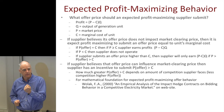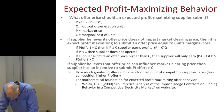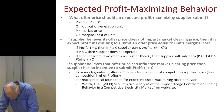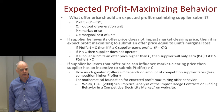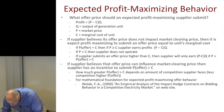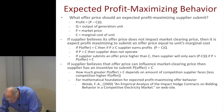A student noted what appeared to be a typo on the slide — the distinction between whether the supplier believes their offer price does or does not impact the market clearing price. The point was clarified: if the supplier believes their offer price does not impact the market clearing price, bid marginal cost. If the supplier believes their offer price can influence the market clearing price, the supplier has an incentive to submit an offer price greater than marginal cost.